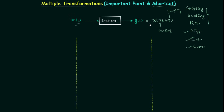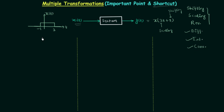The input waveform of signal x(t) is already given, with values from minus 1 to 3 on the time axis. Some people may ask why I'm not taking complicated examples, but the tough thing here is to understand the basic concept of multiple transformations. There is no need to waste time with complicated waveforms. Good problems will be covered once we finish the explanation, and I will create a separate playlist for ESE and GATE questions.